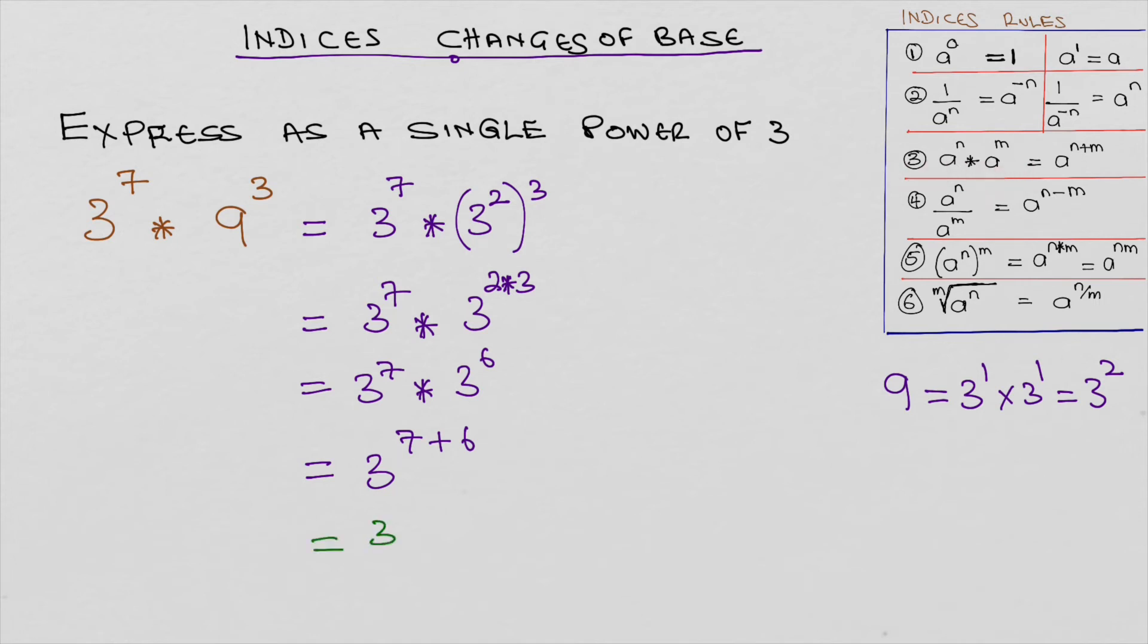3 to the power of 13, which is 3 to the power of 7 times 9 to the power of 3, equals 3 to the power of 13. So what we did was change the 9 here to 3, make them the same base.